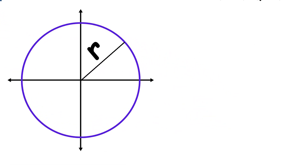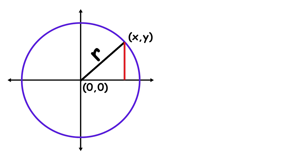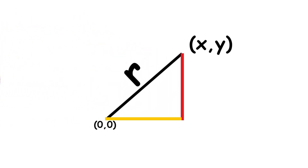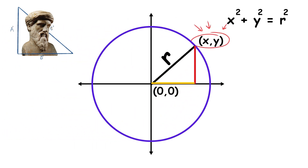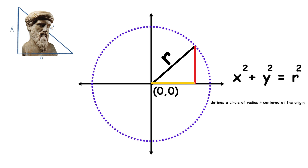For the simplest case, imagine a circle centered at the origin. Draw a radius line segment from the center to some point on the circle — this segment's length is r. Say that point has coordinates (x, y). Draw a vertical line segment from that point to the x-axis, then draw a segment from there back to the origin. The three line segments form a right triangle with legs of length x and y and hypotenuse r. Applying the Pythagorean theorem gives x squared plus y squared equals r squared. This equation captures every point on the circle, so x squared plus y squared equals r squared defines a circle of radius r centered at the origin.